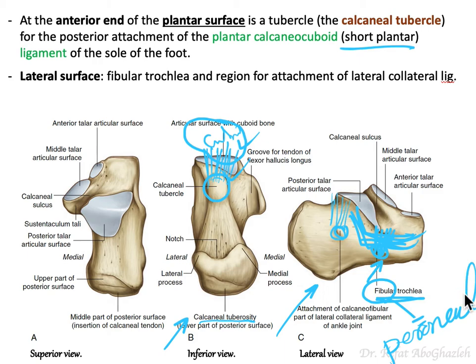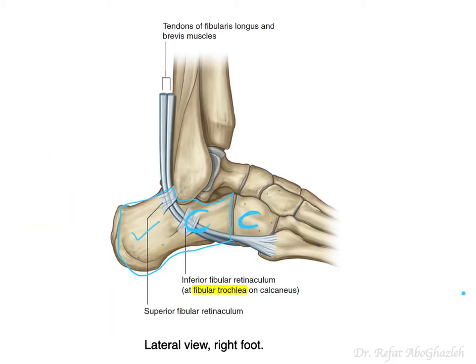The tendons of fibularis brevis and fibularis longus pass by here, and fibularis longus goes around and attaches distally. These tendons are fixed to the fibular trochlea, and the lateral collateral ligament will be discussed when we cover the ankle joint.